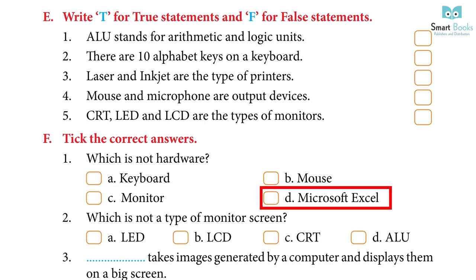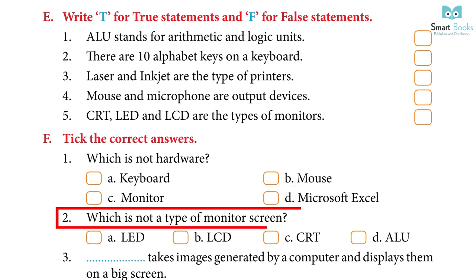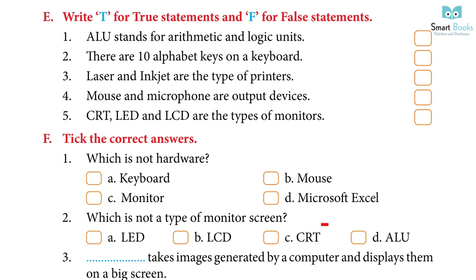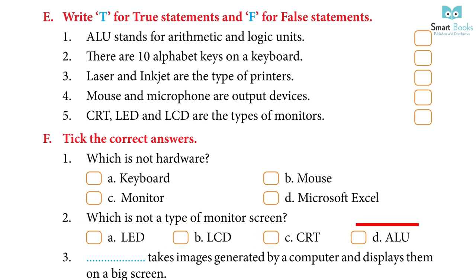2. Which is not a type of monitor screen? A. LED, B. LCD, C. CRT, D. ALU. Answer: D. ALU.